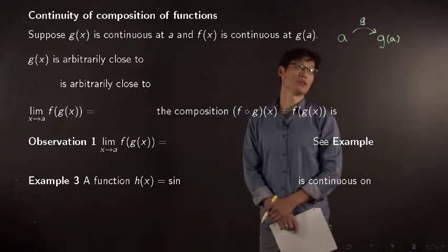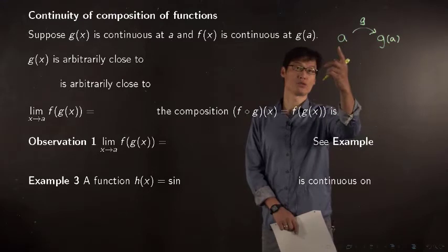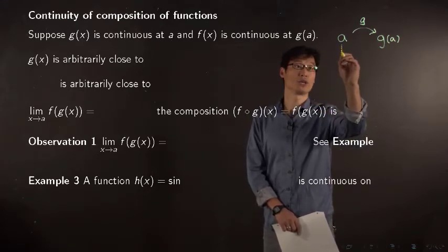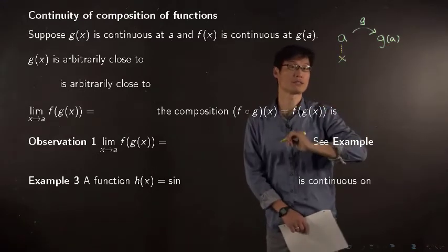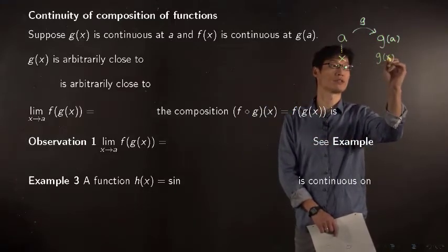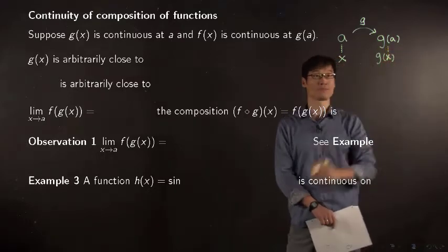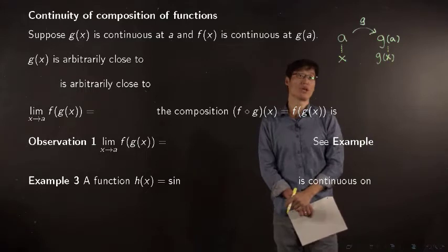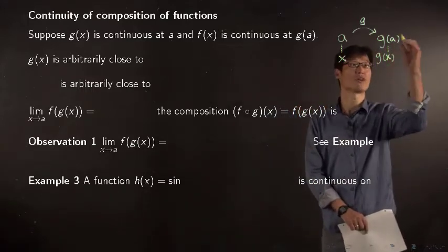If g is continuous at x equals a, then you can pick x so that g of x is very close to g of a. And suppose f is continuous at this value,